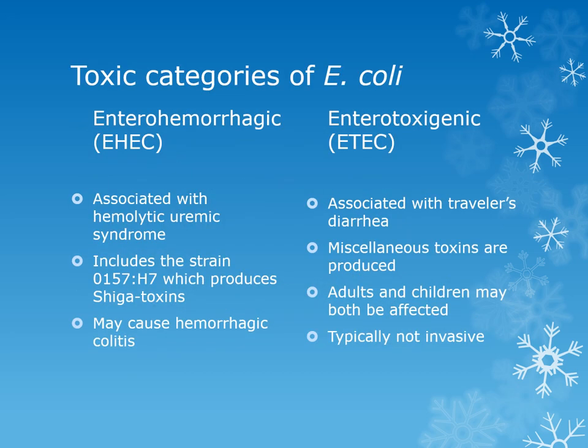There are four categories of toxin-producing E. coli, but the two most common are the enterohemorrhagic E. coli (EHEC) and the enterotoxigenic E. coli (ETEC). These are toxic strains known to occur in hospitals, daycare centers, nurseries, and contaminated food. There was a nationwide outbreak of EHEC on romaine lettuce in January 2017. The EHEC strains are associated with hemolytic uremic syndrome, including the O157:H7 strain which produces Shiga toxins.